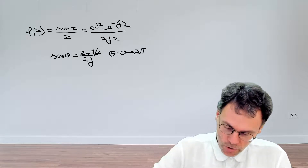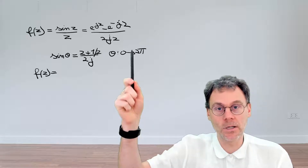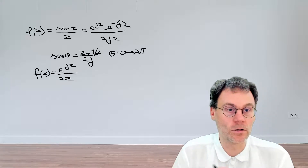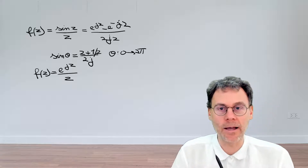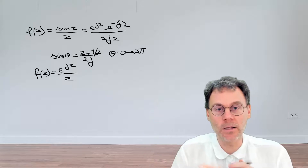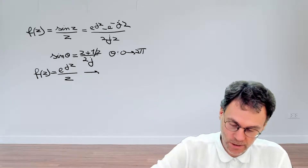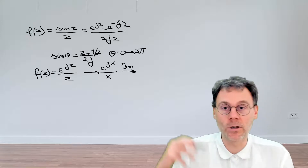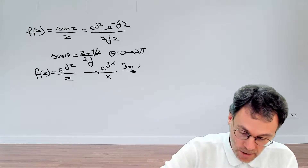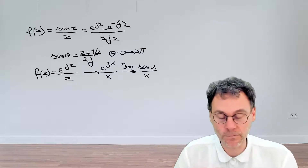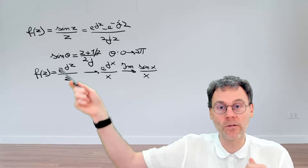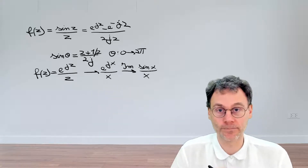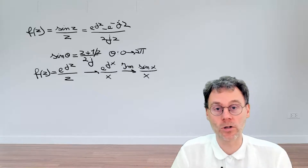A good idea is to split the two terms from the start and only consider e^(jz)/z. If we evaluate this on the real axis we get e^(jx)/x, and since e^(jx) = cos(x) + j·sin(x), taking the imaginary part gives us sin(x)/x — which is what we're interested in. It's much more efficient to use just this term, evaluate on the real axis, and take the imaginary part. So we have our complex function f(z).